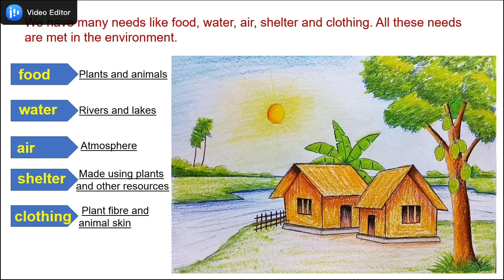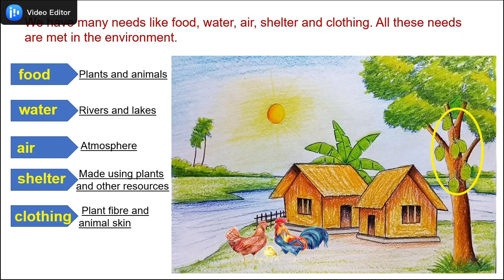Children, we all depend on our environment for our daily needs. We have many needs like food, water, air, shelter, and clothing, and all these needs are met from the environment. For example, we get food from plants and animals — fruits from trees, and animals provide us meat as well as eggs. We get water from rivers and lakes, air from the atmosphere, and we make our shelter using plants and other resources. Plant fibre and animal skin are used for clothing.